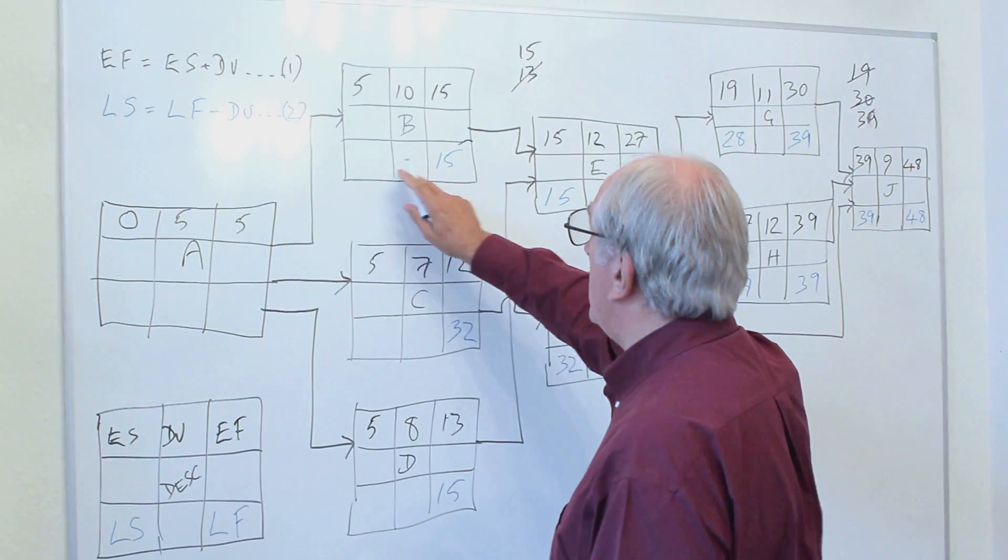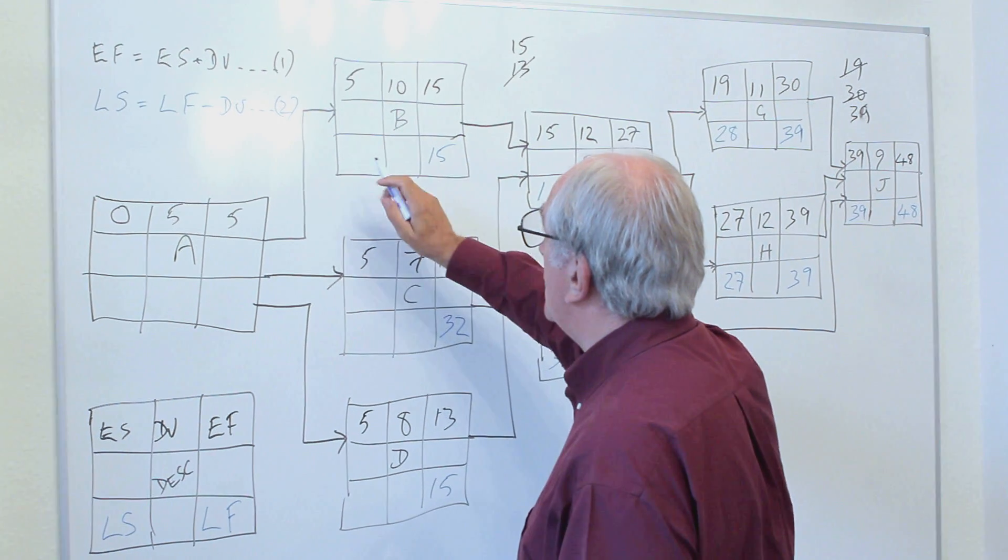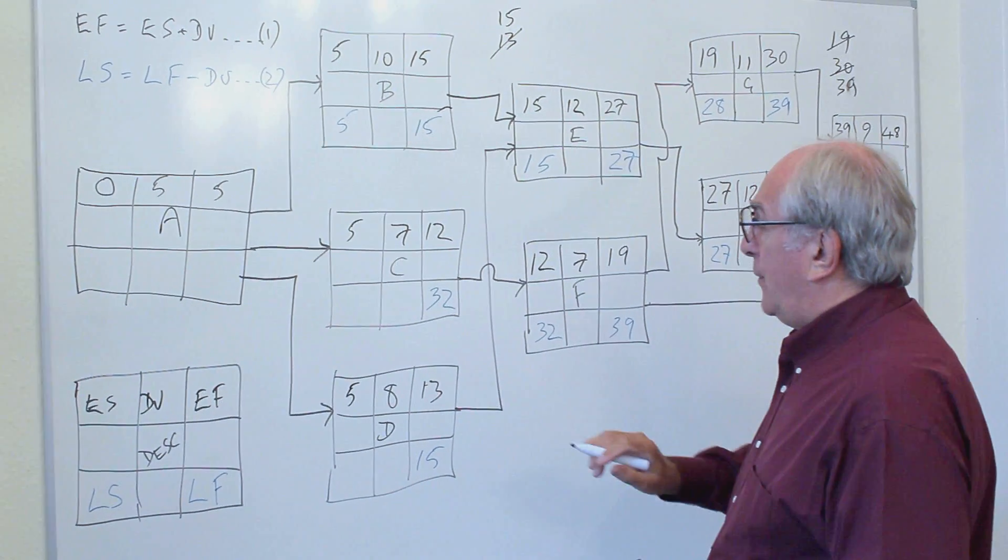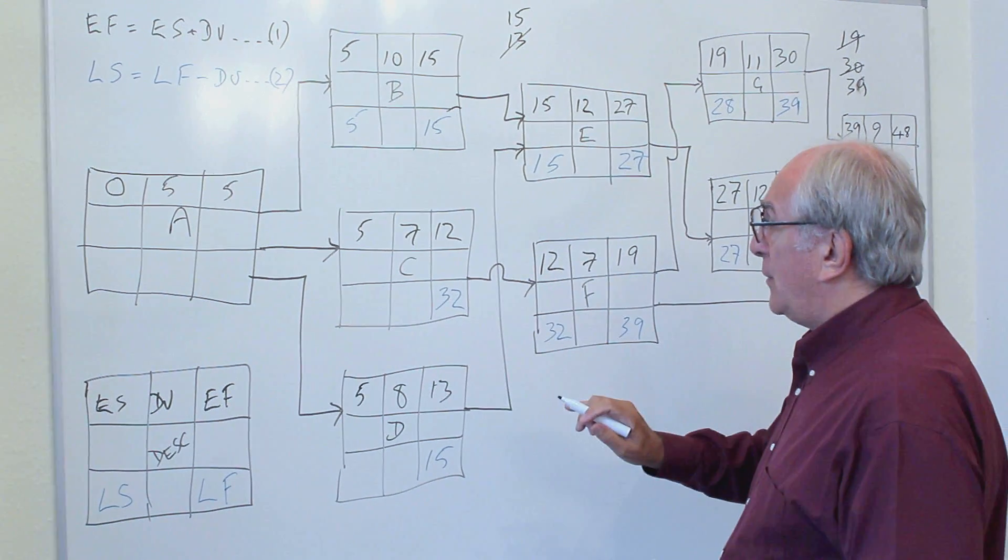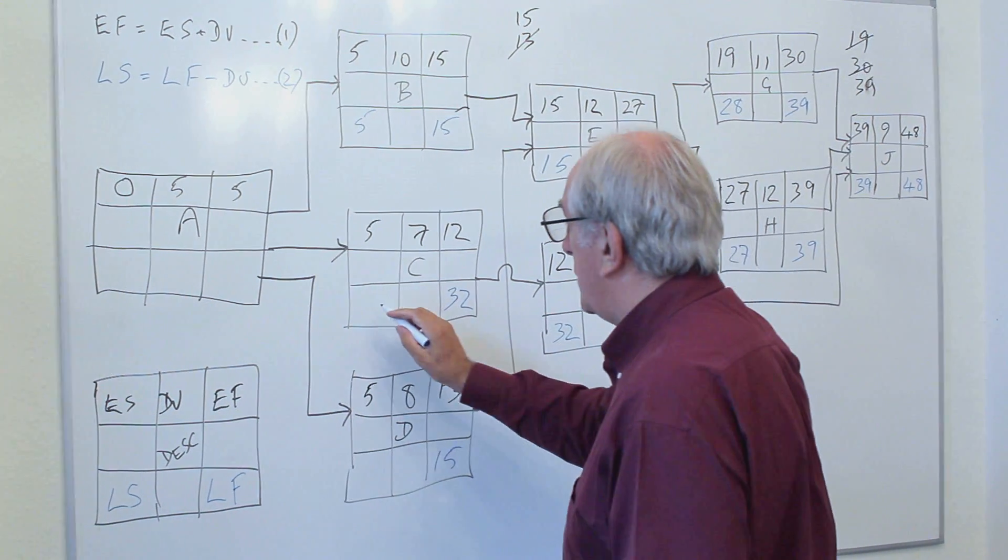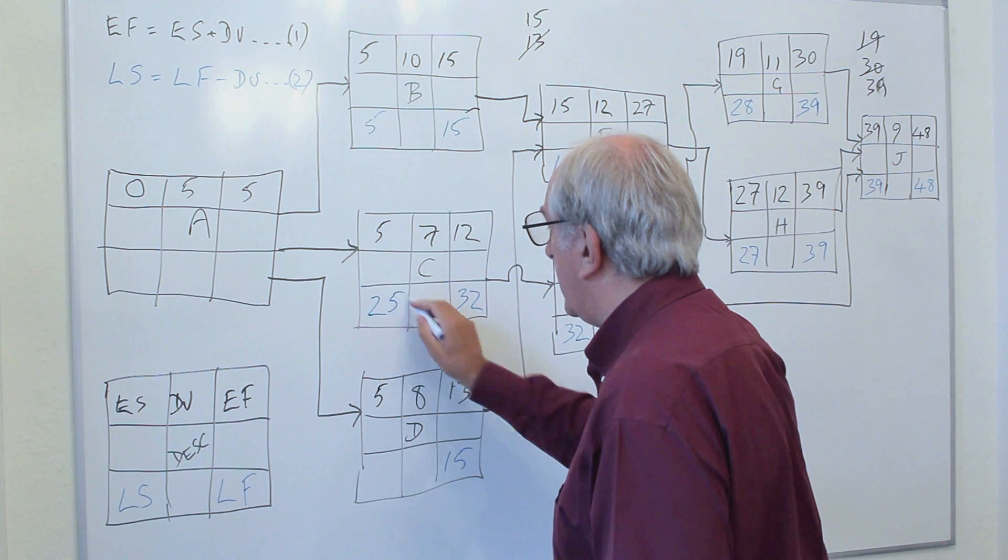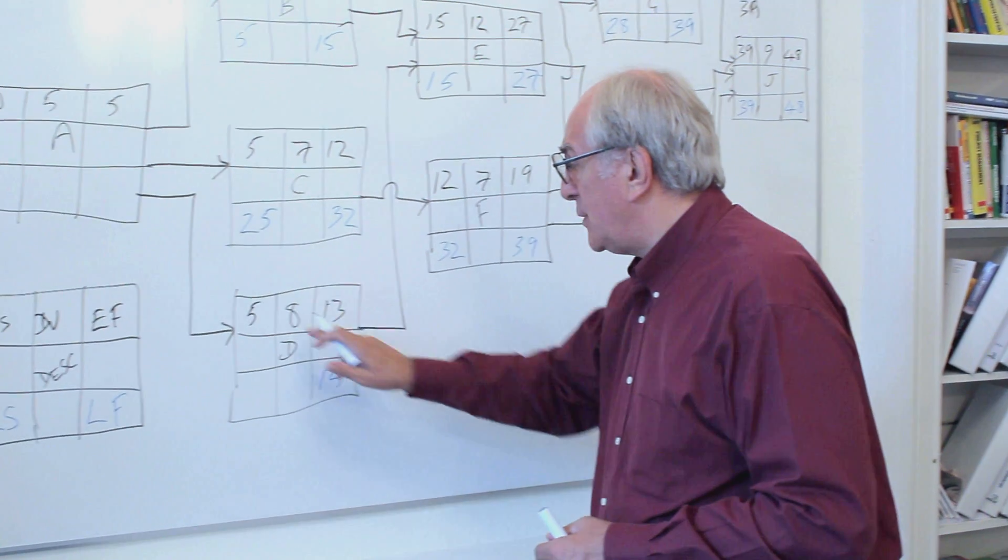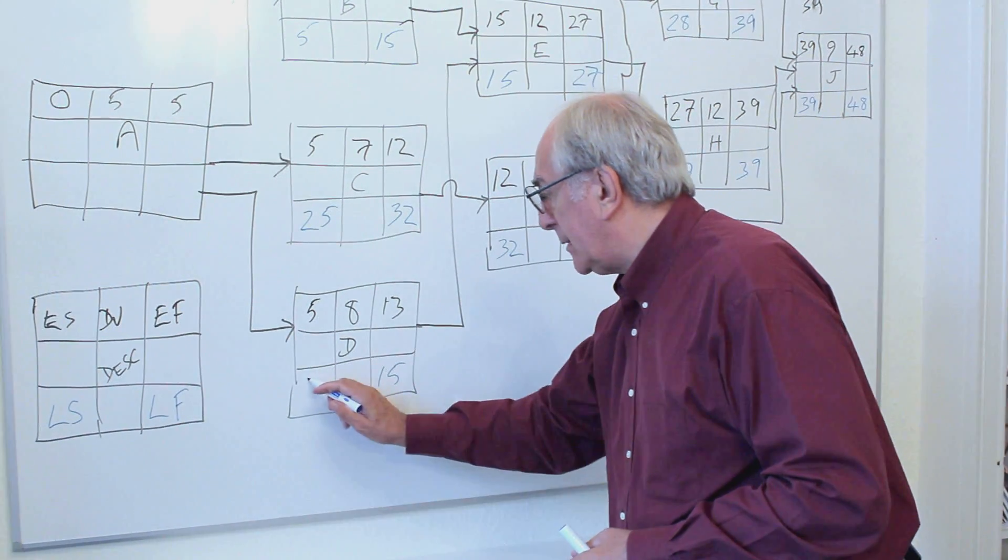So the late start for B is the late finish of 15 minus the duration of 10, which will give us 5. The late start for C is the late finish of 32 minus 7, which will give us 25 as the late start. And the late start for D is 15, its late finish, minus 8, which will give us 7.